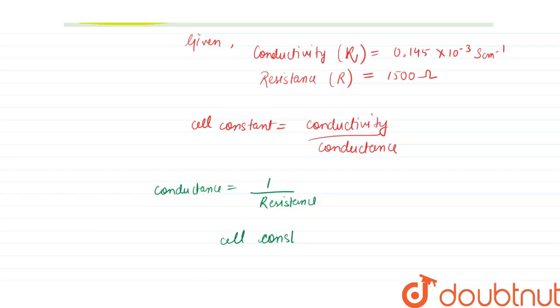So the formula for cell constant will be: cell constant will be equals to conductance, that is denoted by kappa, into R, that is resistance.